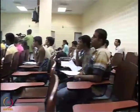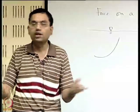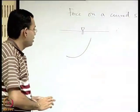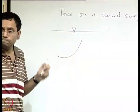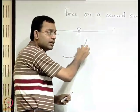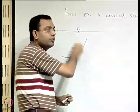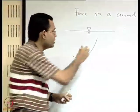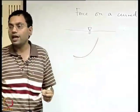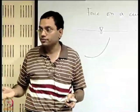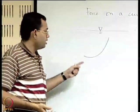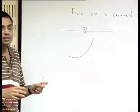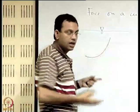For a curved surface, the principle is the same: take an element, find the force acting on it (normal to the surface), break it into horizontal and vertical components, then algebraically sum each component to make the vector addition. It is sometimes possible to reduce the calculation using the concept of force on a plane surface, and we will see how.